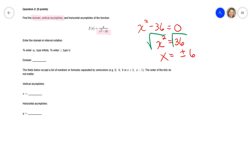Those are the two numbers that x cannot be, and those would be the vertical asymptotes. The fields below accept a list of numbers or formulas separated by semicolons. The order of the lists do not matter.